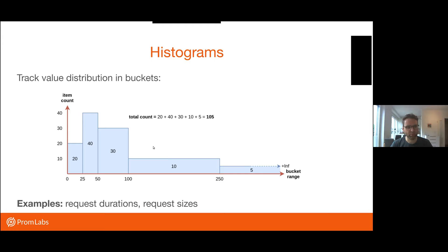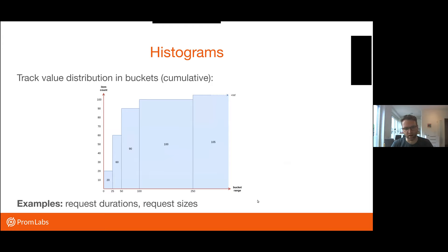Prometheus tracks histograms in a cumulative fashion, meaning that each bucket contains the events that are already counted in the previous bucket. So if we show exactly this histogram in a cumulative fashion, this bucket includes the 20 from this and this one includes the 60 from this. So the values only increase for subsequent buckets.